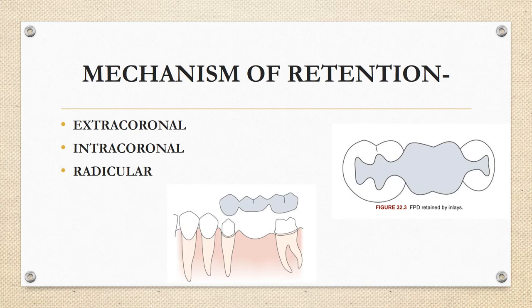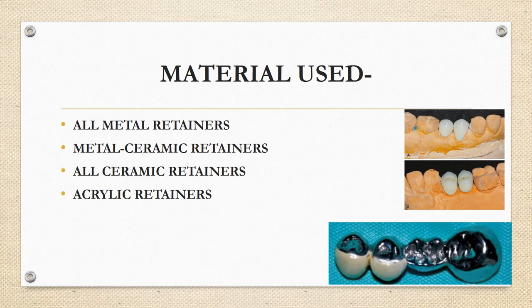The next classification is mechanism of retention, divided into three types: extracoronal, intracoronal, and radicular. Radicular means taking support from the roots — that becomes your post and core. Extracoronal means taking retention from outside the crown. Intracoronal means taking support from inside the crown, as in the case of inlays. Extracoronal retainers obtain retention from the external surface of the coronal part of the abutment — examples include full veneer crowns and partial veneer crowns. Intracoronal retainers obtain retention from within the coronal tooth structure — examples are inlays.